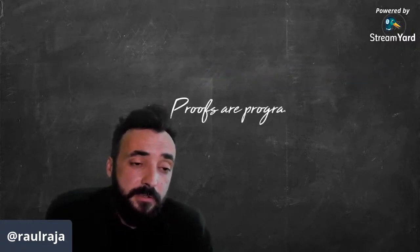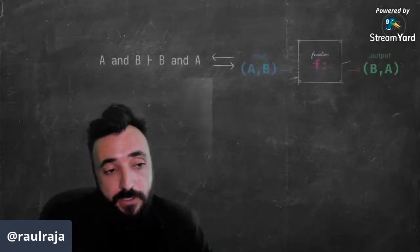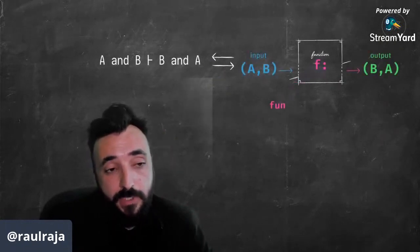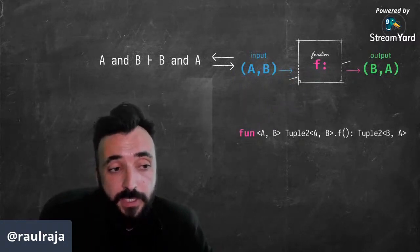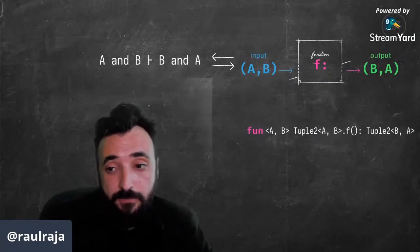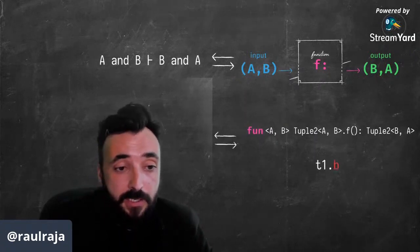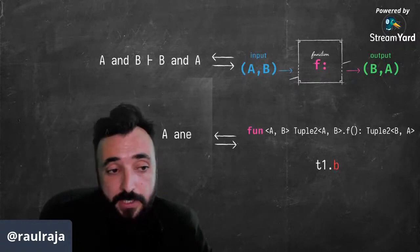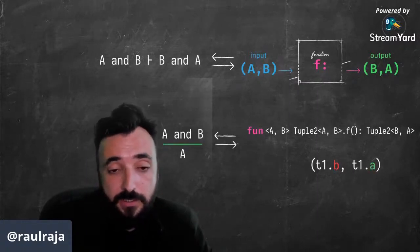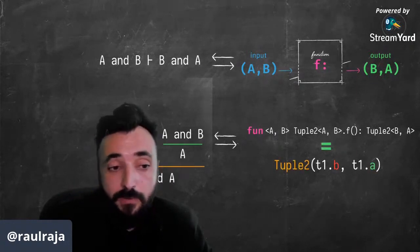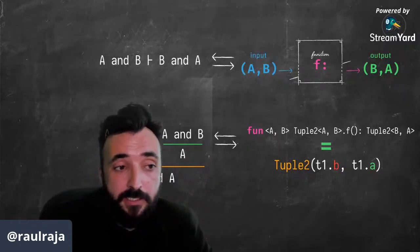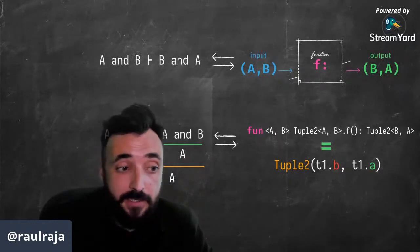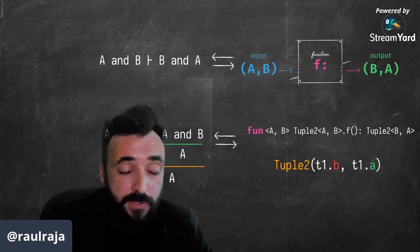The other part of this notion is that proofs are programs. We can see here that for the example we were seeing before, we can potentially just write a Kotlin function that will satisfy this condition. Now we see the direct relationship between what we write in a programming language and the Boolean logic implications that some of those statements have in terms of the types and how they relate with each other.